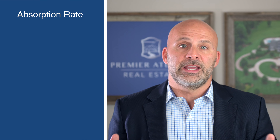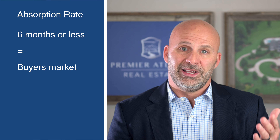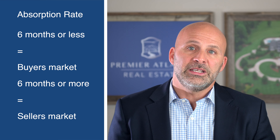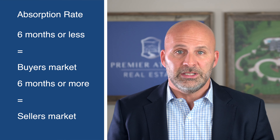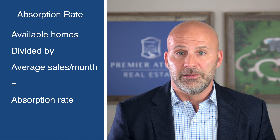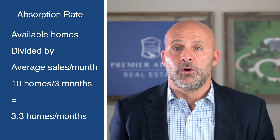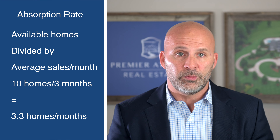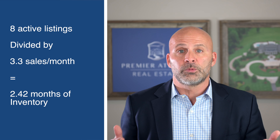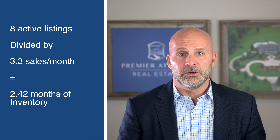Now I need to find the absorption rate for homes like his — also known as the supply of homes or inventory levels. This is the time it takes to sell the current active listings. Six months or less is a seller's market and six months or more is typically a buyer's market here in Atlanta, though it may be different for your market. To find the absorption rate, take the number of available homes divided by the average sales per month. We found ten homes sold in the last three months — ten divided by three equals 3.3 homes selling on average every month at his price point. We have eight homes available, so eight divided by 3.3 gives us 2.42 months of inventory. That means it's a seller's market for this home and homes near him at his price point.